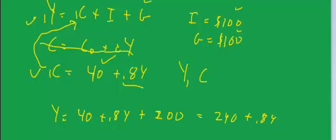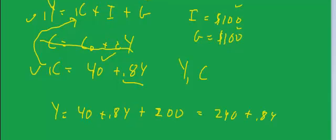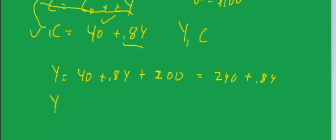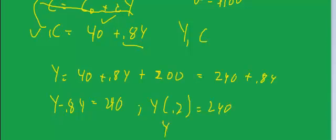So it's equal to 240 plus 0.8Y. Now we have one equation and one unknown. We have to collect terms in Y, and we get Y minus 0.8Y equals 240, or Y times 0.2 equals 240, or Y equals 1 over 0.2 times 240.